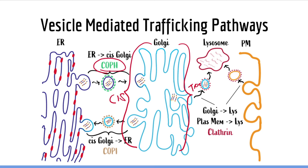Let's keep talking about coat proteins. The next coat protein is called COP1. COP1-coated vesicles transport proteins from the Golgi back to the endoplasmic reticulum. This is called retrograde transport because proteins are moved away from the plasma membrane and towards the center of the cell. These would be the vesicles which transport proteins destined for the endoplasmic reticulum.